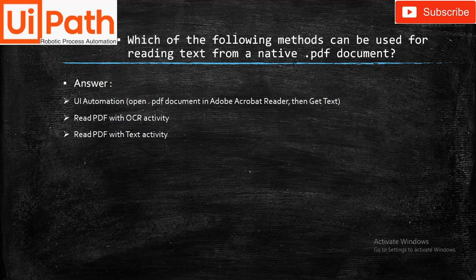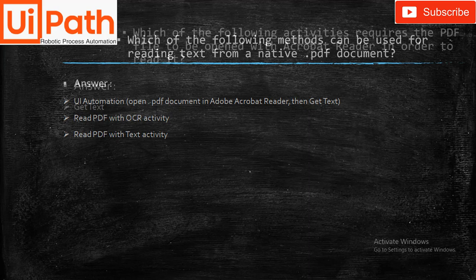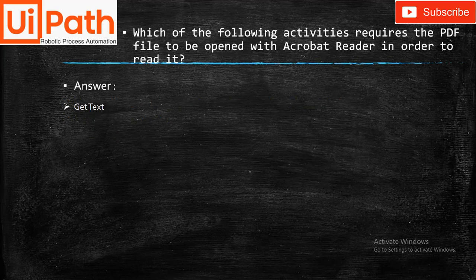Which methods can be used for reading text from a native PDF document? Multiple answers: UI Automation — open the PDF document in Adobe Reader then use Get Text; second, Read PDF with OCR activity; and third, Read PDF with Text activity.